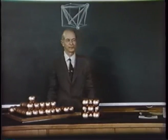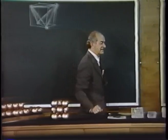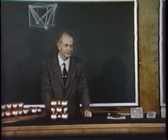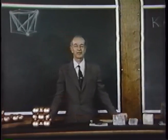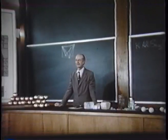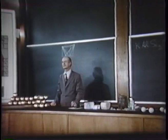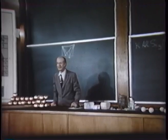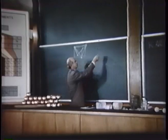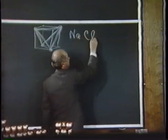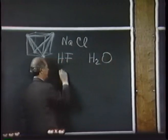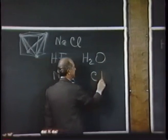The way that chemists have attacked the problem of the relation between the properties of substances and their structure goes back about a hundred years. It was just a hundred years ago that Franklin, Kekulé, and Couper, and other people, originated the idea of the chemical bond and valence. It was known at that time that substances such as salt have formulas such as NaCl. Hydrogen fluoride is HF, water H2O, ammonia NH3, methane CH4.